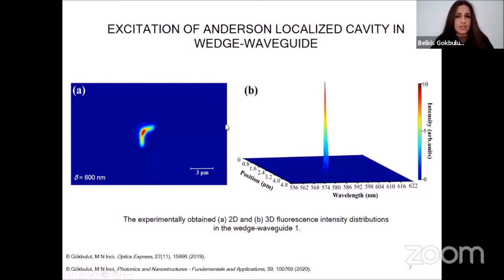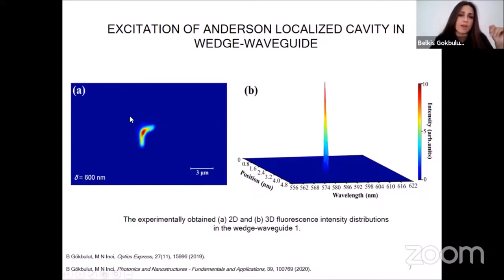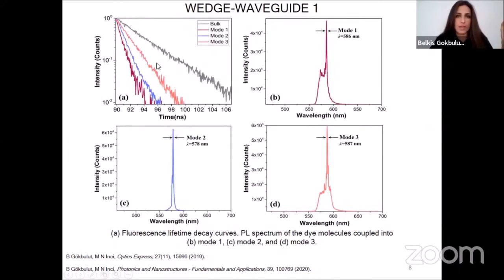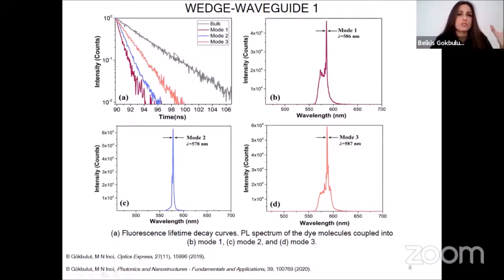The experimentally obtained 2D and 3D fluorescence intensity distributions of the dye molecules coupled into a single Anderson localized mode in waveguide 1R are demonstrated in figures A and B. The emitted light is collected from the sample face through our confocal microscopic setup, and when the background signal is removed from figure A, a sharp spectral resonant spot confined between two cavity walls is clearly seen. The fluorescence lifetime decay curves of the excited emitters coupled into the Anderson localized modes in waveguide 1R and also in bulk material are demonstrated in figure A. The characteristics of the decay populations of the on-resonant emitters of modes 1, 2, and 3 are observed to be quite different from one another, which shows that the emissions from the dye molecules coupled into the optical modes are localized with distinctive electromagnetic states due to the random configurations of scattering centers within the polymeric medium.